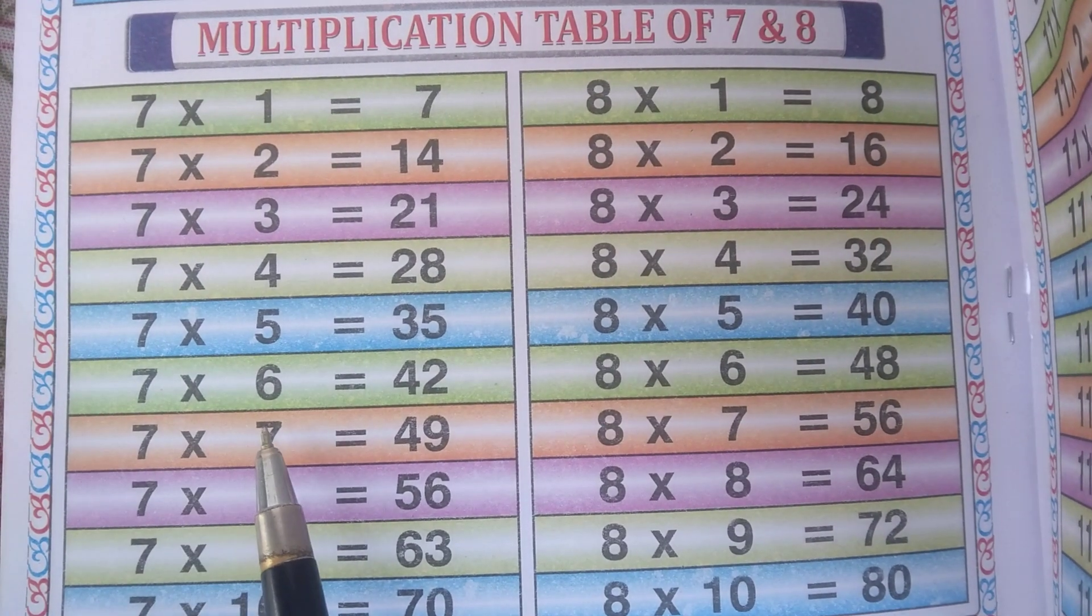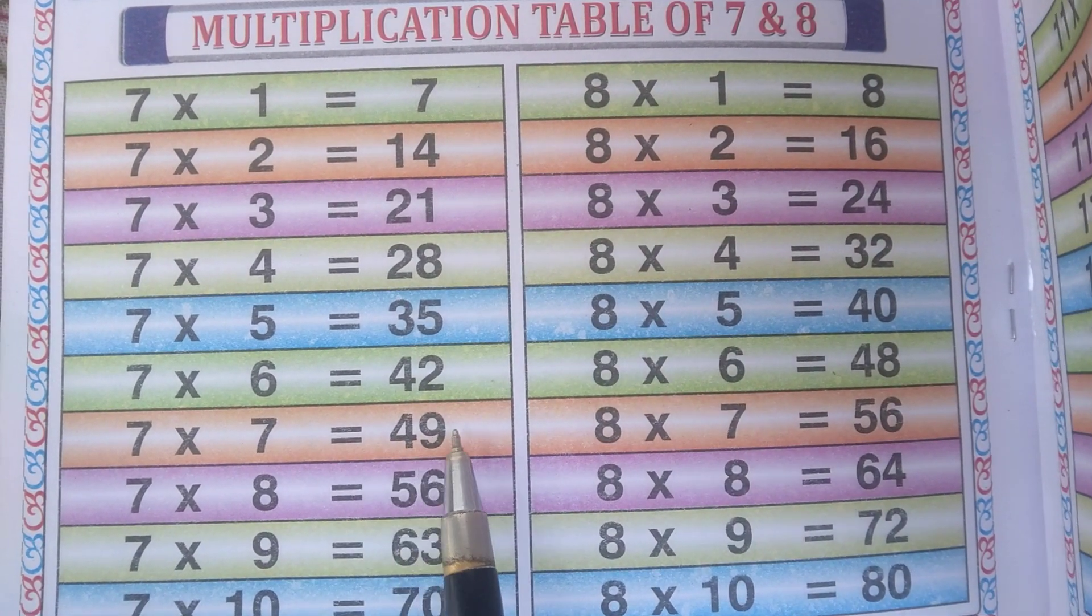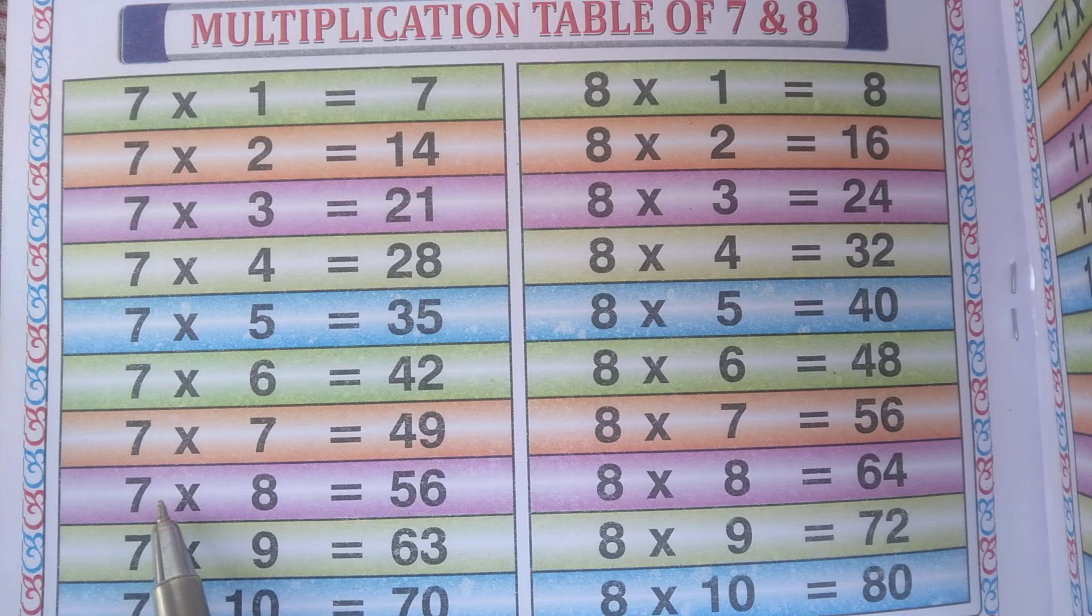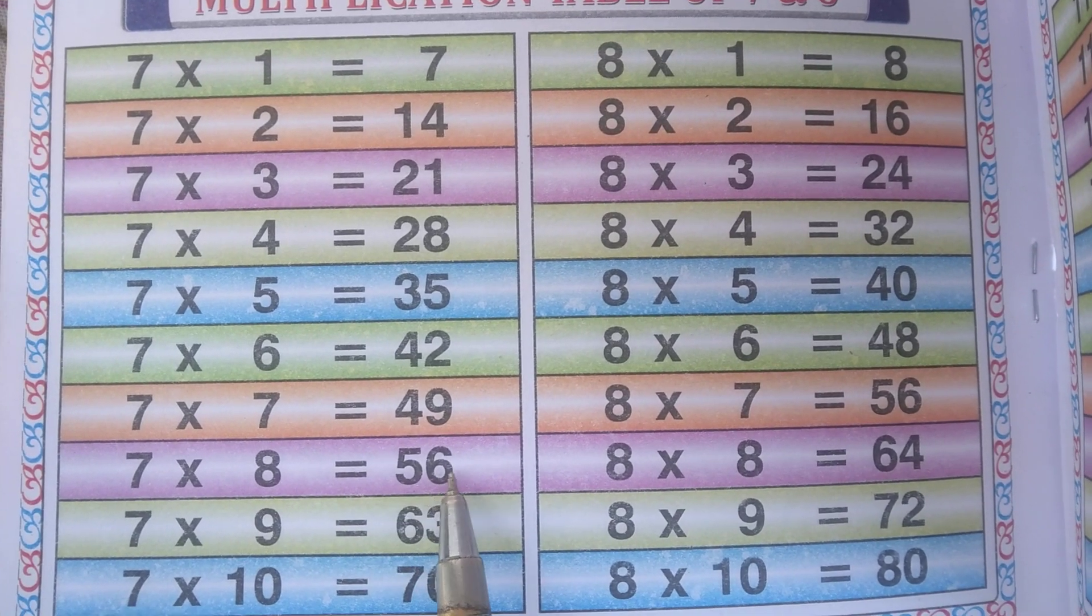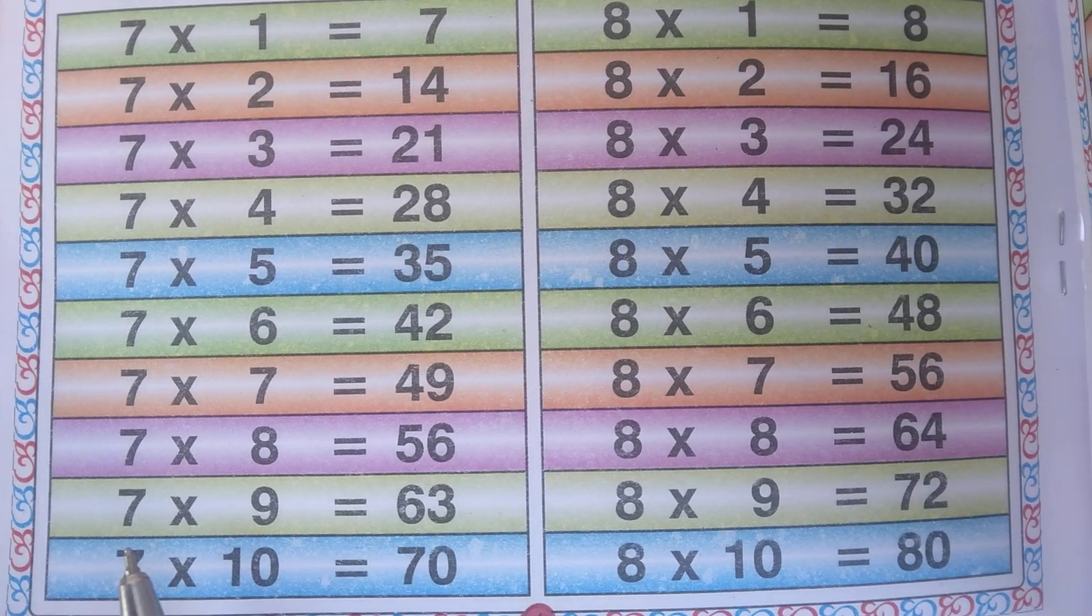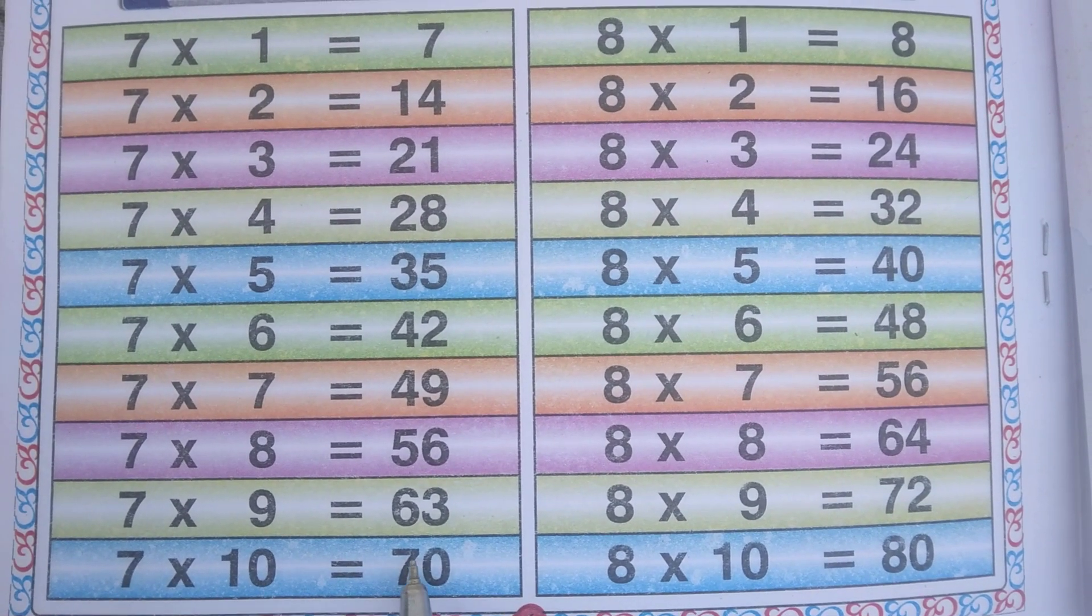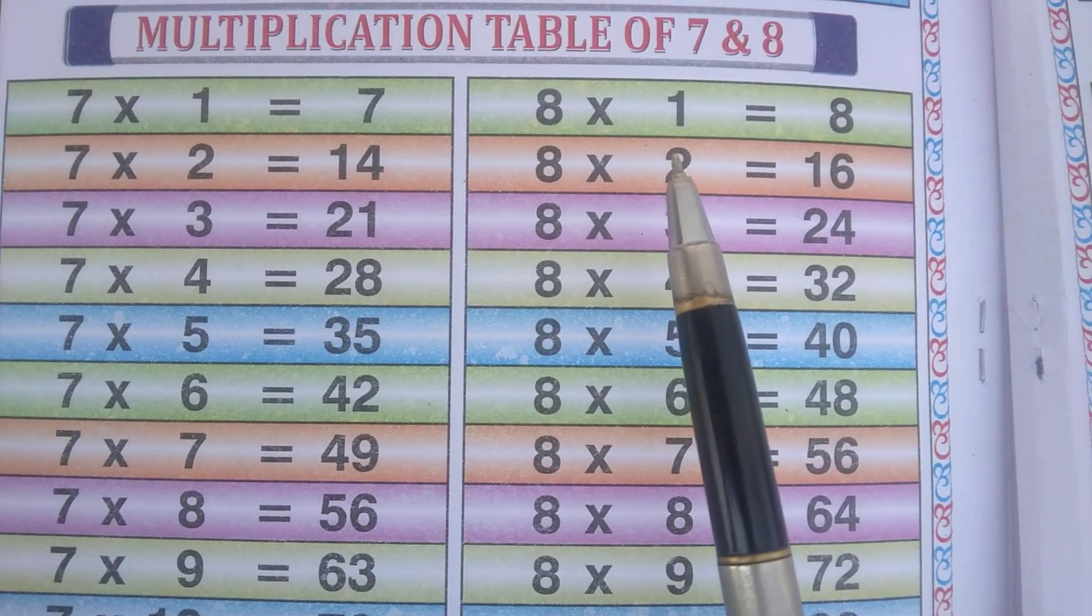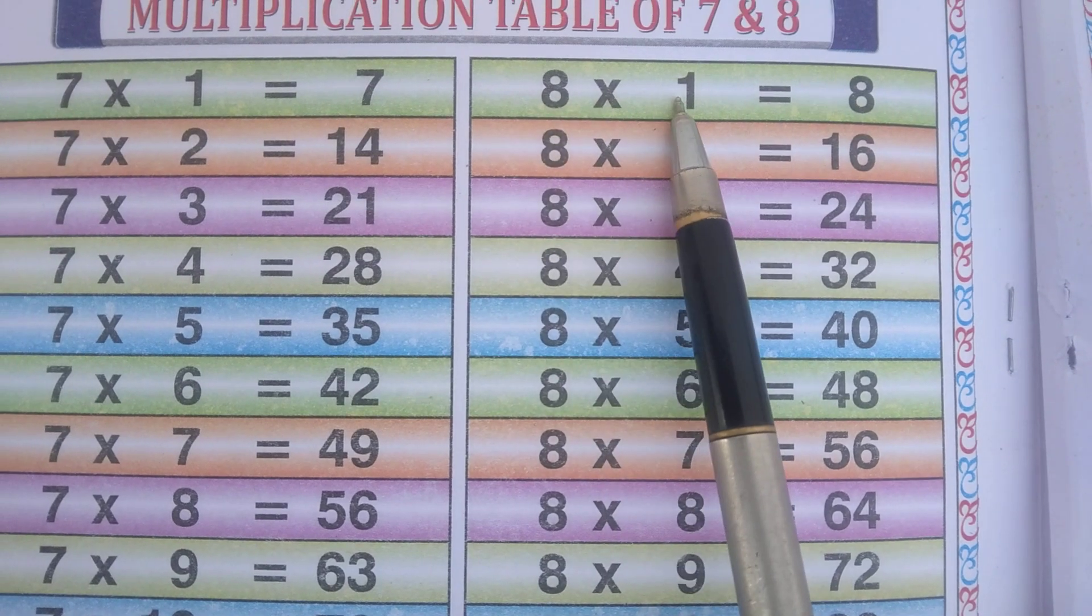7 7s are 49, 7 8s are 56, 7 9s are 63, 7 10s are 70. 8 1s are 8,